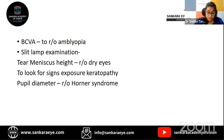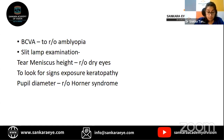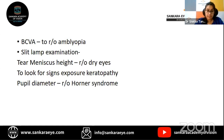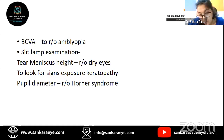Then proceed to basic slit lamp examination. Look for tear meniscus height, any irregularity, and rule out dry eyes. Look for signs of exposure keratopathy, and if there is pre-existing lagophthalmos, assess how much exposure keratopathy is present. Check normal pupil diameter — in Horner's syndrome, one component is miosis. Horner's syndrome consists of ptosis, miosis, lower eyelid elevation, anhydrosis, and loss of ciliospinal reflex. Also examine the retina, because in Kearns-Sayre syndrome there would be retinal pigmentation.